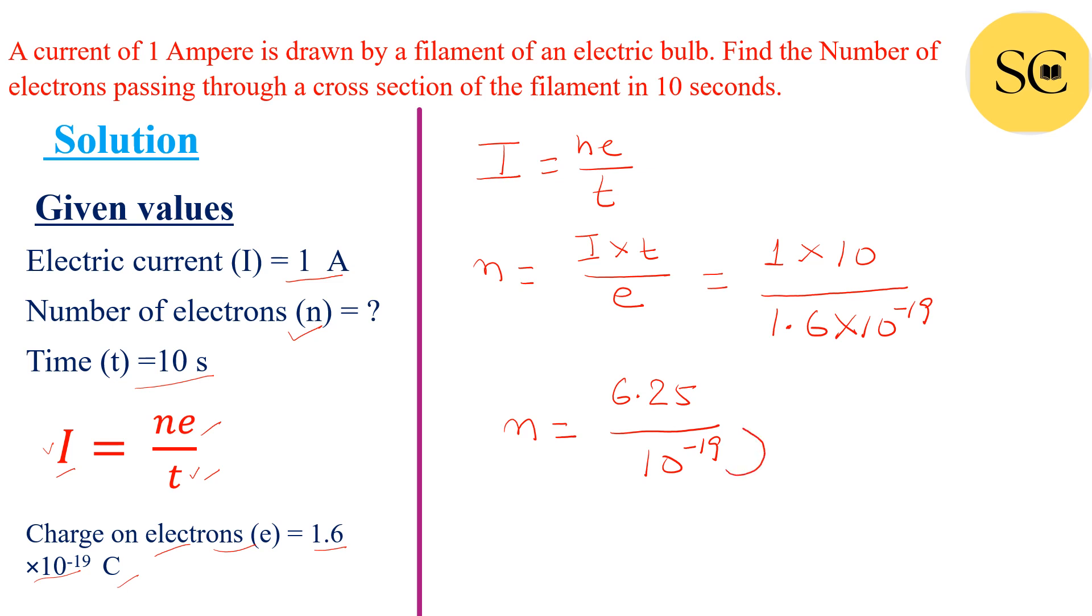So it will become 6.25 × 10^19. This is the number of electrons.